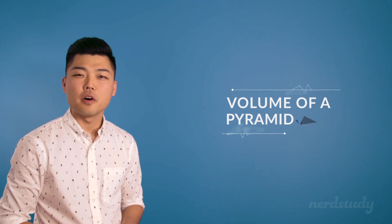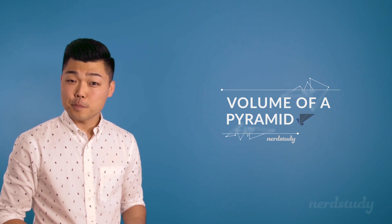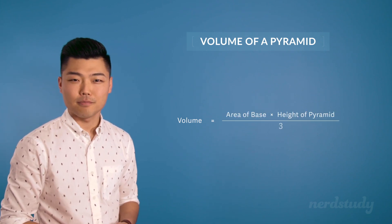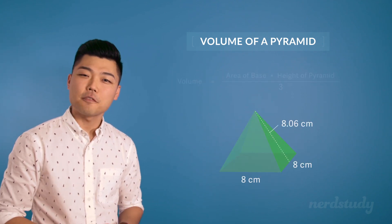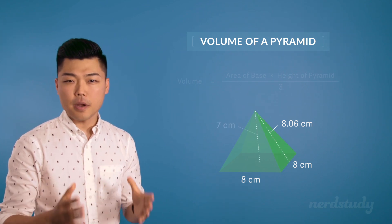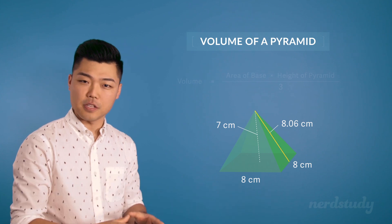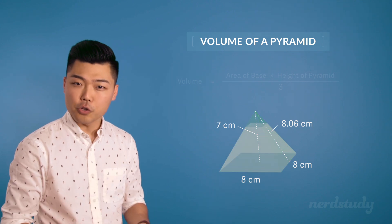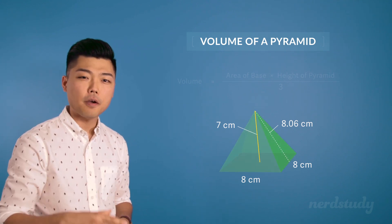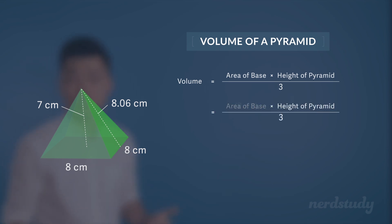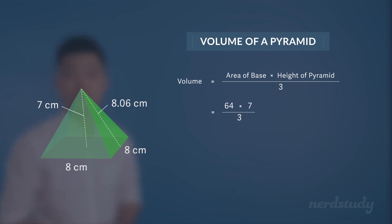What about finding the volume of a pyramid? It's pretty easy — all we have to do is follow this formula: base area times height of pyramid divided by 3. So in this situation, we have both the height of the triangular lateral face and the height of the pyramid. For surface area we use the lateral face height; for volume we focus on the height of the pyramid itself. Filling in the formula: the base area is 8 times 8 which equals 64, then we multiply 64 by 7 and divide by 3 to get an approximate total of 149.33 centimeters cubed.